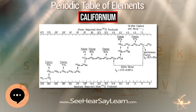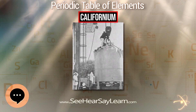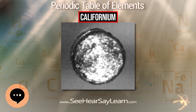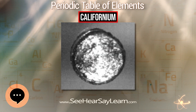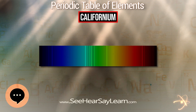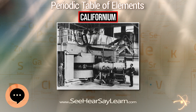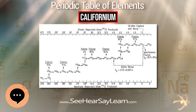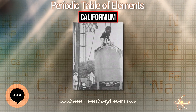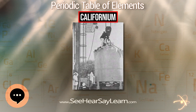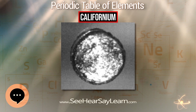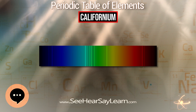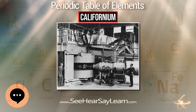Californium was first synthesized at the University of California Radiation Laboratory in Berkeley by physics researchers Stanley G. Thompson, Kenneth Street Jr., Albert Ghiorso, and Glenn T. Seaborg on or about February 9, 1950. It was the sixth transuranium element to be discovered, and the team announced its discovery on March 17th, 1950. To produce californium, a microgram-sized target of curium-242 was bombarded with 35 MeV alpha particles in the 60-inch cyclotron at Berkeley, producing californium-245 plus one free neutron.